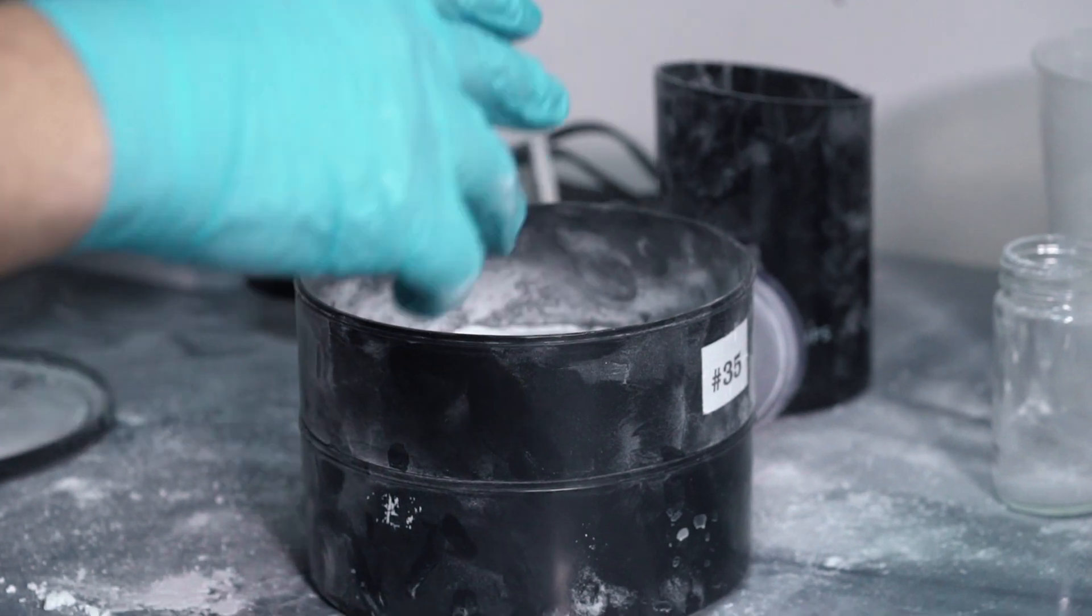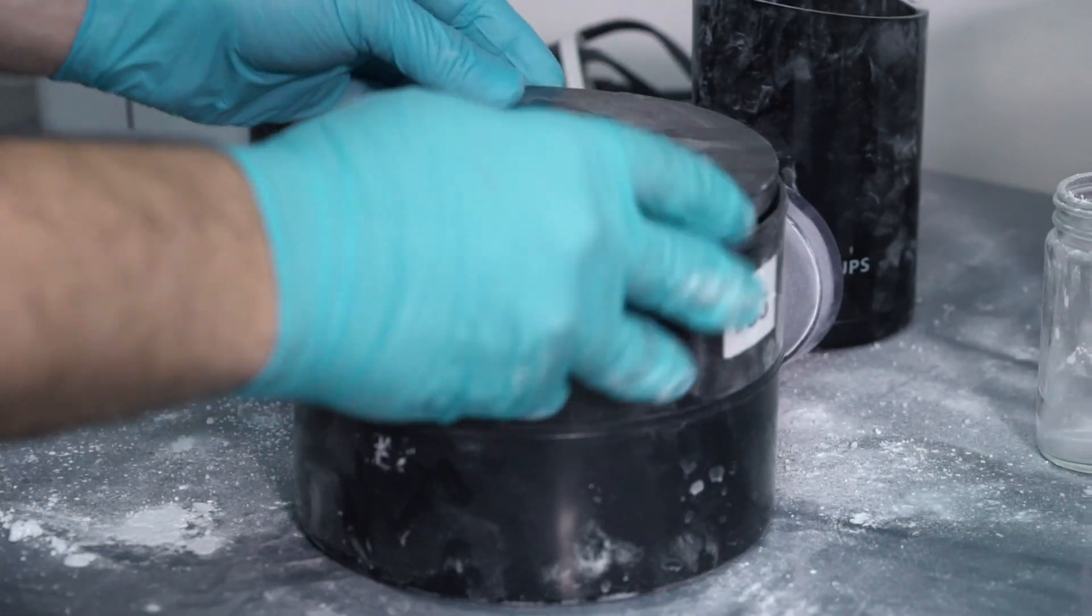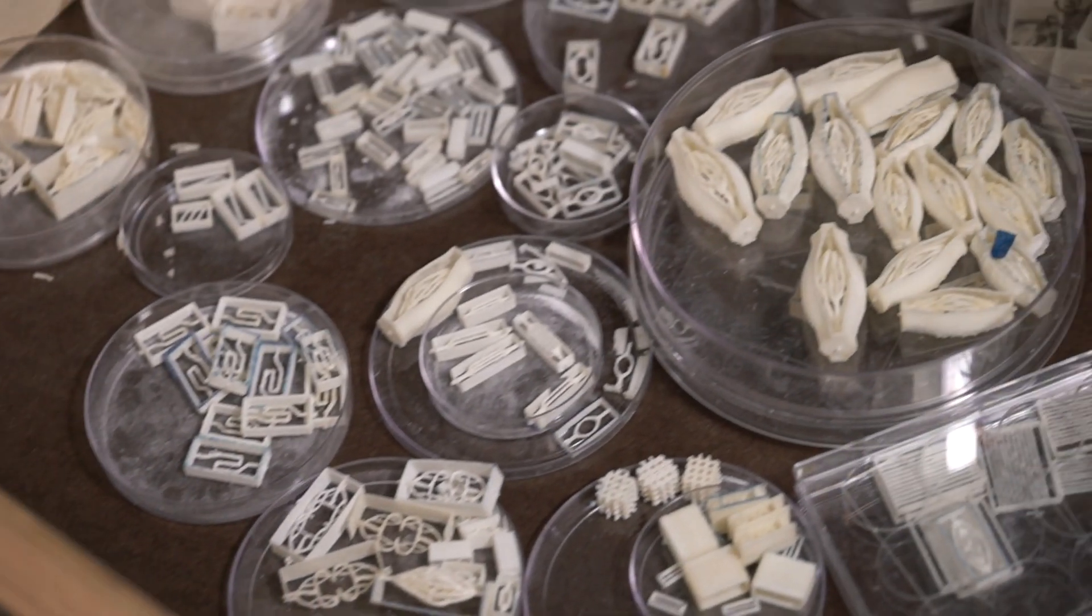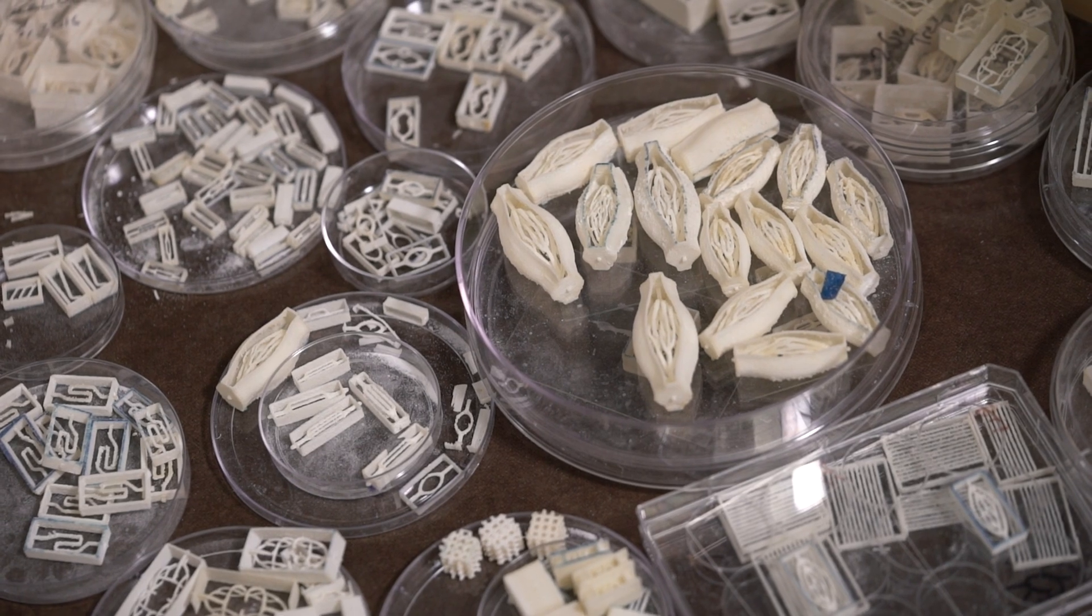Our lab actually has a pretty rich history of using sugar as a material to construct vascular network templates. And the way we've done that in the past was through a sort of conventional way of 3D printing where you extruded melted sugars into the structures you wanted.